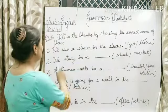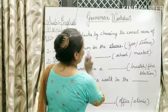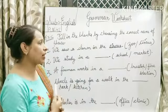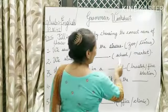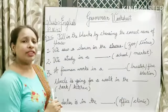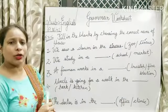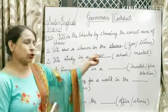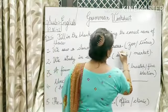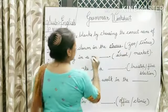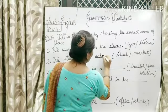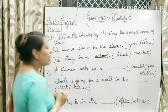Coming to the second one. We study in a blank. Hum padhte kahan hain? Study — padhai ka kaam kahan karta hai? School mein jaake, market mein jaake? Market mein toh aap saman lete ho, things buy karne jaate ho. Study ka kaam hota hai school mein. So the correct answer is school. You have to tick on school and then write it in the blank. S-C-H-O-O-L, school.